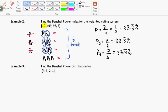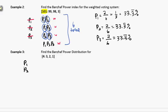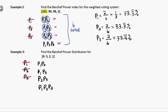Next example: let's find the Banzhaf power distribution for [4; 3, 2, 1]. Starting with all possible coalitions: player one, player two, player three alone; groups of two — one and two, one and three, two and three; and the grand coalition of one, two, and three. Crossing off losers: nobody wins on their own. One and two add up to five — win. One and three add up to four — win. Two and three only add up to three — loss, cross them off. One, two, and three together is always a win.